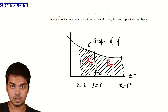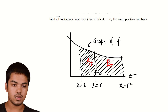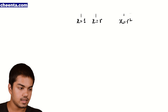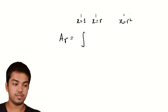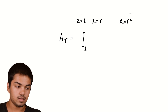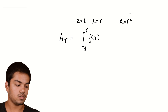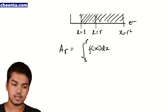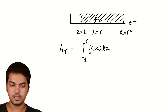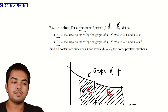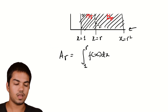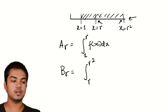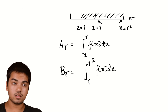Clearly, this is prompting us to look at areas, and what do we do when we want to find areas under general functions? Since A(R) is the area between x equals 1 and x equals R, A(R) is nothing but the integral from 1 to R of f(x) dx. F is a continuous function, so we can integrate it. And B(R) is the integral from R to R-squared of f(x) dx. That is what the definite integral is.